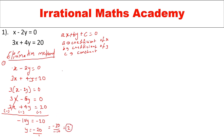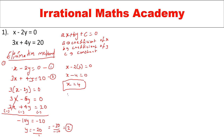Now I will substitute y equal to 2 into either equation 1 or equation 2. Using equation 1: x minus 2 times 2 equal to 0, so x minus 4 equal to 0, therefore x equal to 4. So I got the x value and the y value.